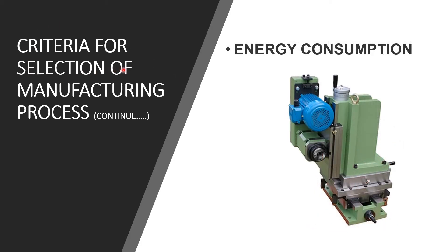Another criterion for selection of manufacturing process is energy consumption. Electric energy is extensively used in manufacturing — almost every machine works on electric energy, whether from primary, secondary, or advanced manufacturing processes. Some processes require less energy while some consume more. It totally depends on the machine and how much energy it consumes during operation.